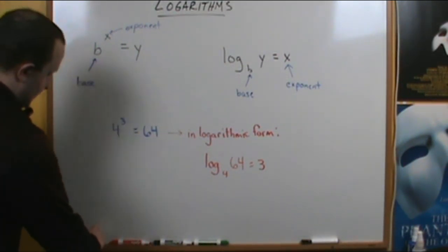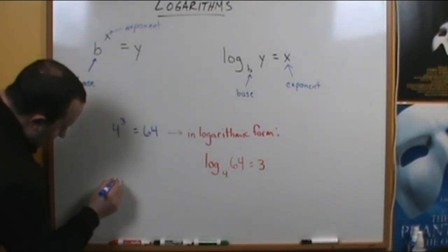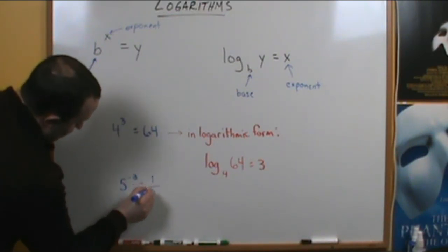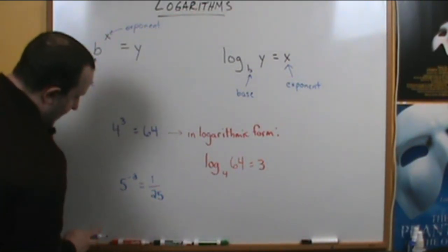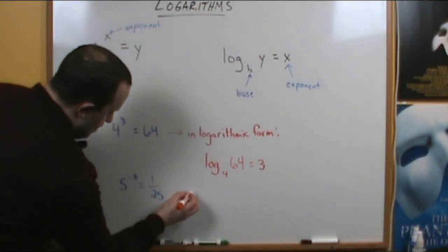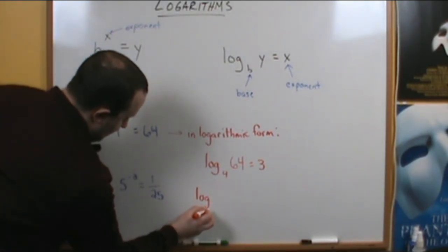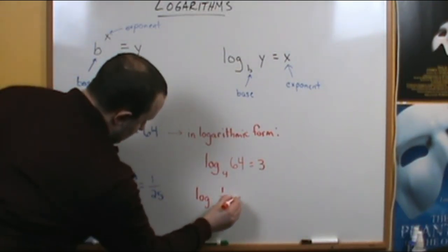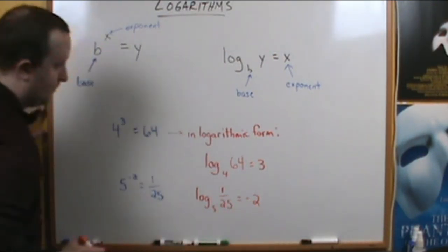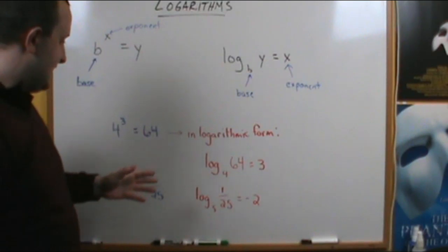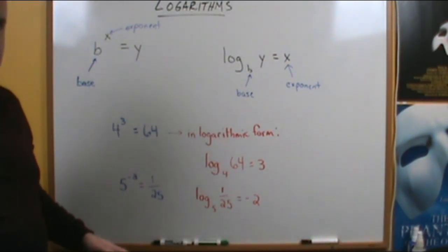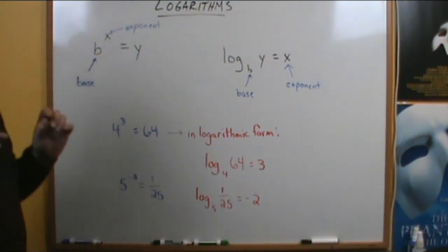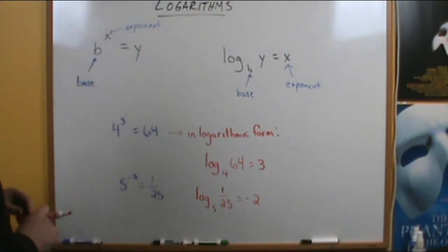Similarly, if we did 5 to the negative 2, that's 1 over 25. In logarithmic form, the log with a base of 5 of 1/25 is equal to negative 2. The big thing to remember is that a logarithm is just an exponent. It's just an exponent.